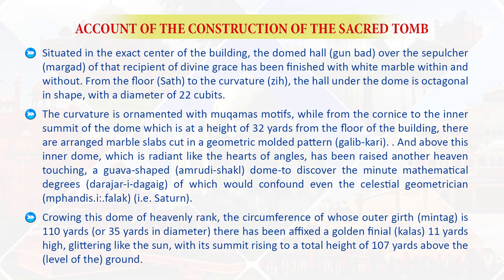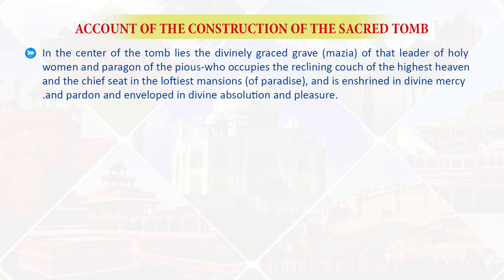Crowning this dome of heavenly rank — the circumference of whose outer girth is 110 yards — there have been affixed a golden finial 11 yards high, glittering like the sun, with its summit rising to a total height of 107 yards above the ground. In the center of the tomb lies the divinely graced grave of that leader of holy women and paragon of the pious, who is enshrined in divine mercy and pardon, and enveloped in divine absolution and pleasure.